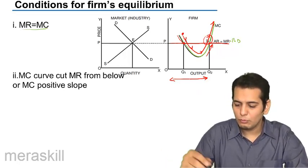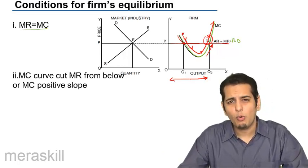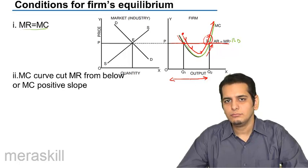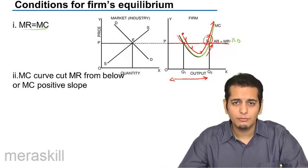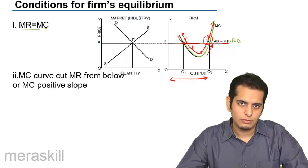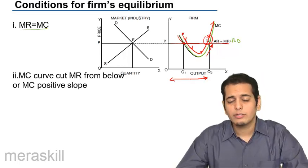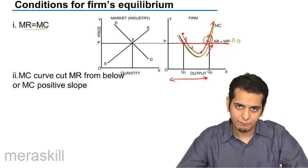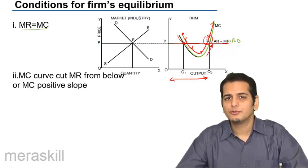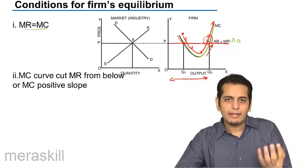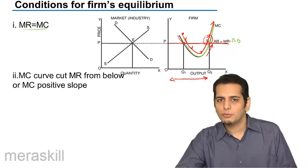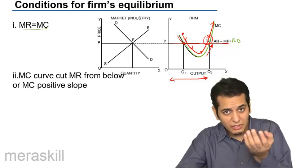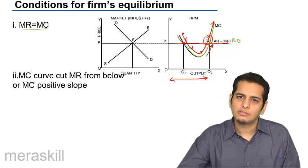Now we know how the equilibrium is set for the firm. But what do we mean by equilibrium? Equilibrium means how much should the firm produce — what is the quantity the firm should produce? And what is the revenue it will get, and what is the cost at that point that it is incurring? The equilibrium is where marginal revenue equals marginal cost — the revenue from selling the extra unit equals the cost of selling that extra unit.